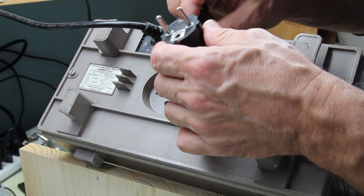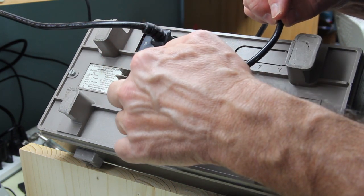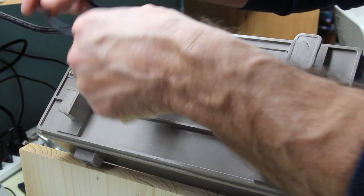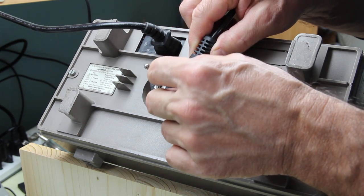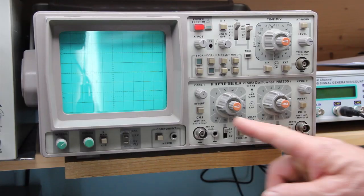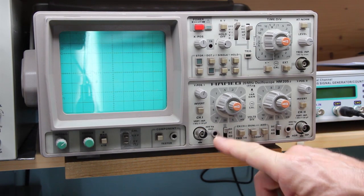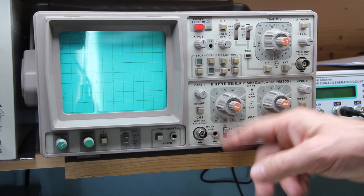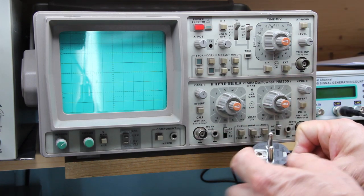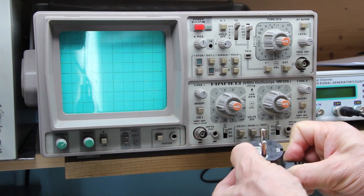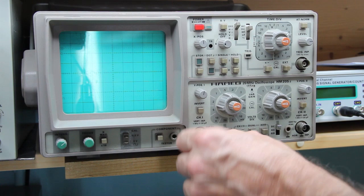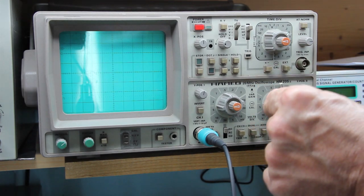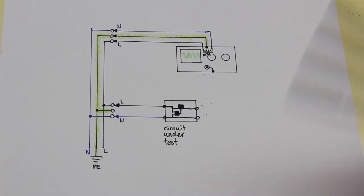The input of the oscilloscope and this ground are internally connected to the ground that in turn goes to the protective earth. So when we connect the probe to the oscilloscope, the shield that is connected here is actually connected to the protective earth. So here we go.